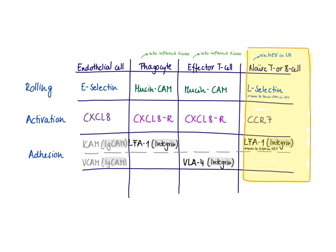For the first rolling step there's again an interaction between a selectin and a sugary mucin CAM. But this time the selectin is on the lymphocyte — on the T or B cell — which is why it's called L-selectin. L-selectin always interacts with mucin CAM, but this time it's the other way around: mucin CAM is now expressed on the high endothelial venule.